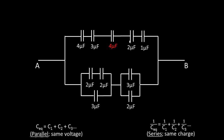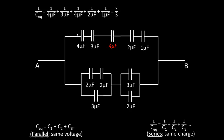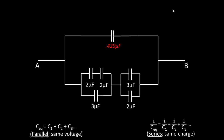Now notice that the top branch is all in series. Each capacitor in the top branch is in a series connection with each other. So the four microfarad, three microfarad, four microfarad, two microfarad, and one microfarad capacitors can be added inversely. So we do: 1/4 + 1/3 + 1/4 + 1/2 + 1/1 = 7/3. Taking the inverse, the equivalent capacitance for the top branch is 0.429 microfarads. We can go ahead and replace the whole top branch with this equivalent capacitor.